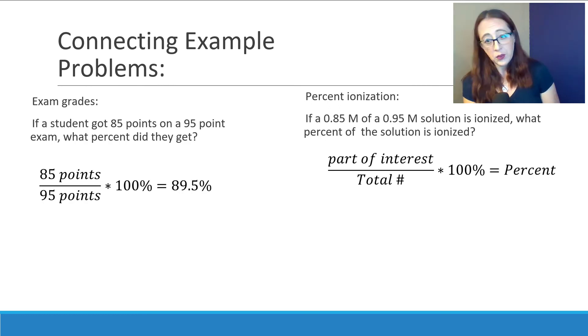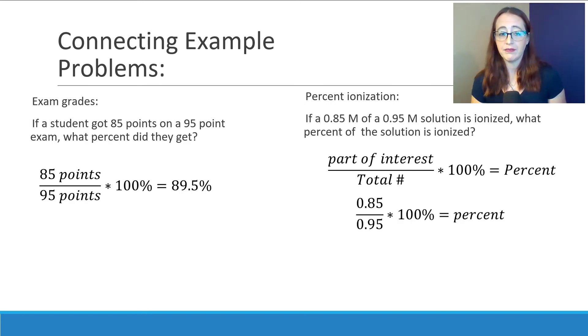Just like our exam grade process, we're going to put the part that we're interested in, in this case the 0.85 that we were told ionizes, over the total molarity of the solution, or the 0.95 that we were told about. We can then multiply by 100 percent to get our total percent. And you can see how this directly relates to that first exam problem that we did as well. And this would give us an 89.5 percent ionization energy.